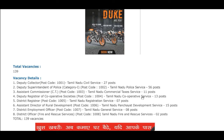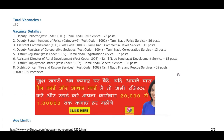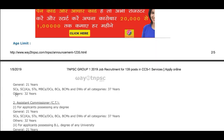Deputy Register of Co-operating Society — 13 Posts. District Regulator — 17 Posts. Assistant Director of Rural Development — 15 Posts. District Employment Officer — 8 Posts. District Officer — 2 Posts.